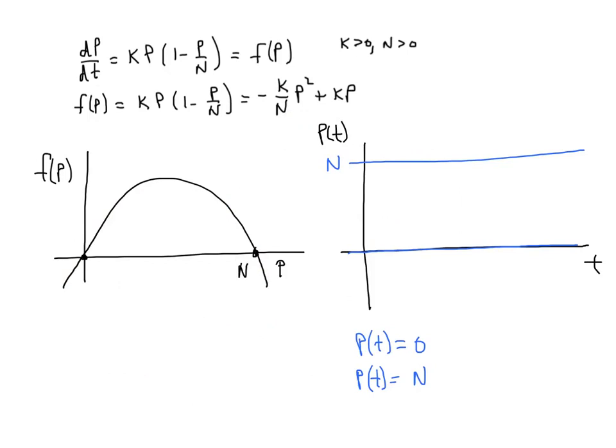You'll see that we use equilibrium solutions to sort of frame how the other solutions must behave. In a future section, we're going to discuss the fact that solutions in these situations cannot cross one another. So I've discussed a population of 0 and a population of N. But what happens, what does the model say happens if we start at some initial population here? Since this is my population model at time 0, let's say we're here at some initial population P0.